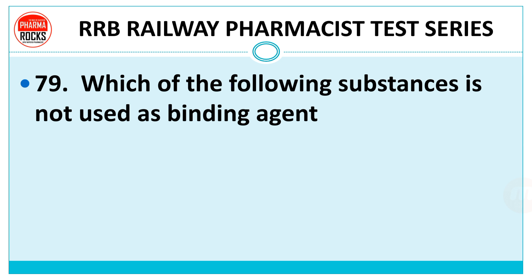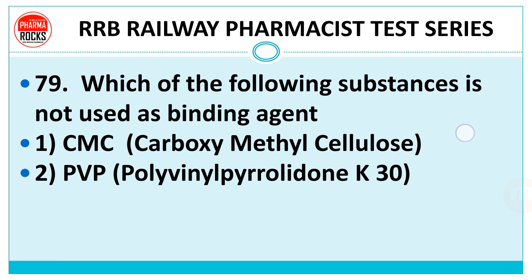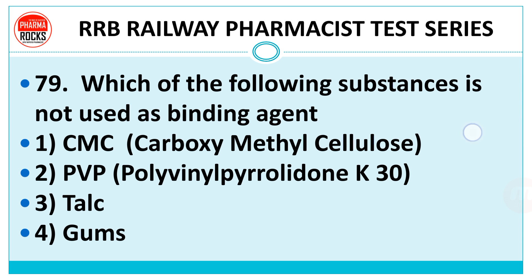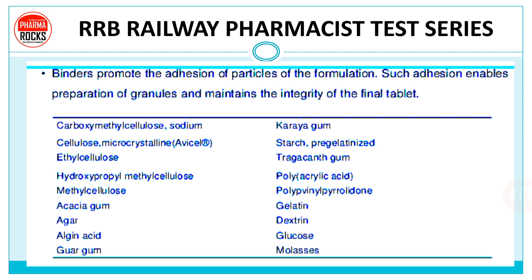Question 79: which of the following substance is not used as a binding agent — CMC, PVP, talc, or gums? The right answer is talc, because talc is mainly used as a glidant, while CMC, PVP, and gums are binders. Binders promote adhesion of particles in the formulation, enabling preparation of granules and maintaining integrity of the final tablet. Examples include carboxymethyl cellulose, sodium CMC, MCC, ethyl cellulose, hydroxypropyl methyl cellulose, various gums, polyvinyl pyrrolidine, and gelatin.